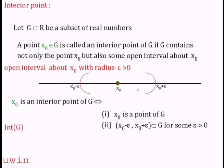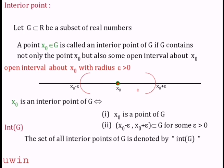Now, int G — that is the interior of G. The set of all interior points of G is denoted by int G, that is the interior of G. Obviously, the first condition is that x-naught is a point of G. The interior is always a subset of G. This is the conclusion.